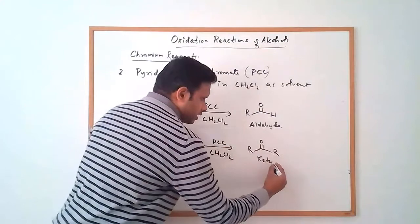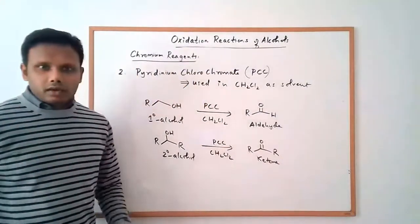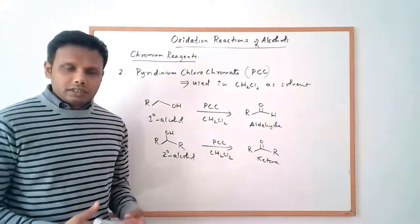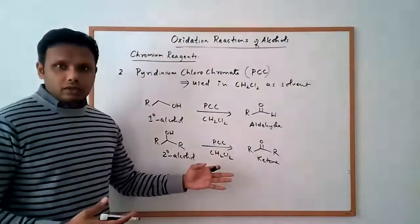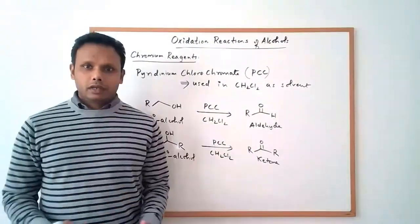If we start with a primary alcohol and oxidize it with PCC in dichloromethane, the primary alcohol is oxidized to the corresponding aldehyde, and the reaction stops there — there is no over-oxidation to the carboxylic acid. A secondary alcohol with PCC would still be oxidized to the corresponding ketone.